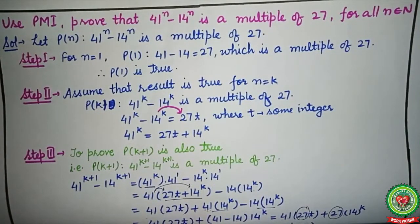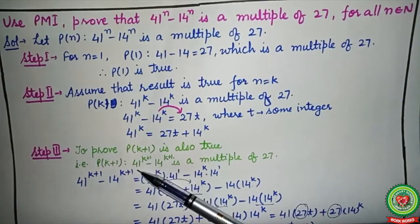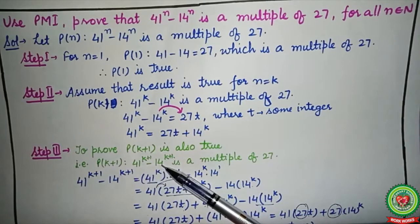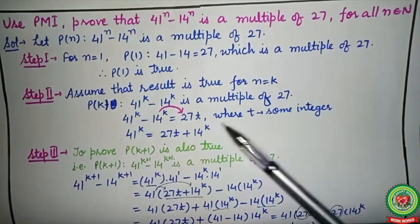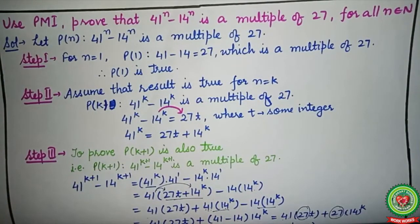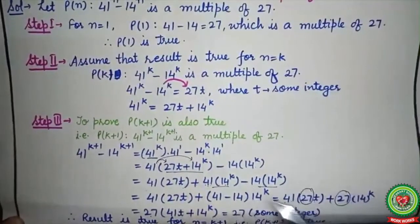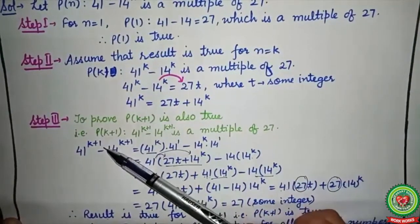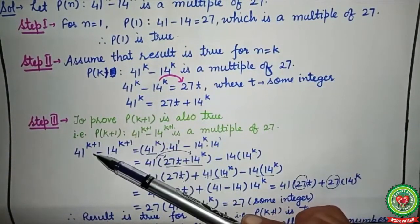In Step 3, prove the result true for n = k+1, that is, 41^(k+1) − 14^(k+1) is a multiple of 27. We assumed it is true for k terms; we now show it holds for k+1 terms. Substituting n = k+1 gives 41^(k+1) − 14^(k+1).